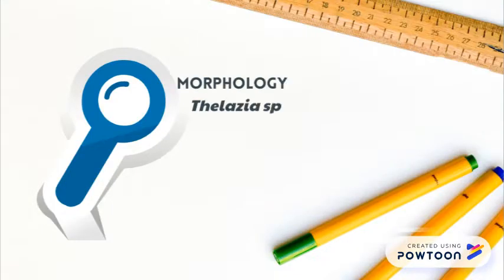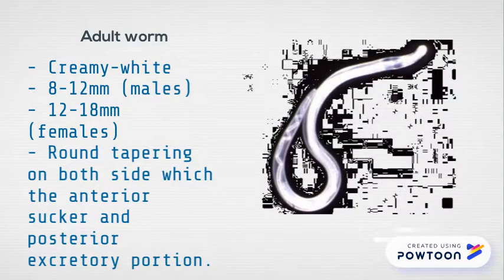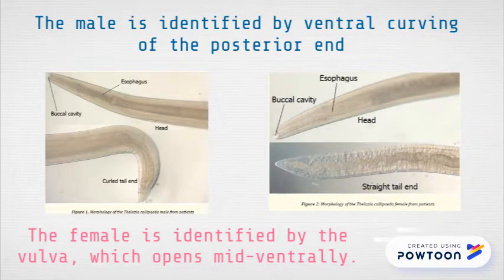Regarding morphology of Thelazia species, adult worms of both species are creamy white and measure up to 8 to 12 mm in males and 12 to 18 mm in females. It is round, tapering on both sides, with the anterior end and posterior end tapered. The male is identified by ventral curving of the posterior end, while the female is identified by a ventrally opening vulva.